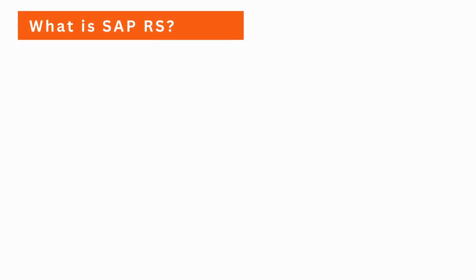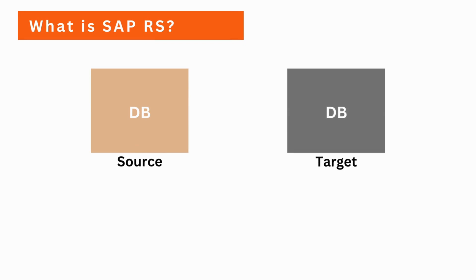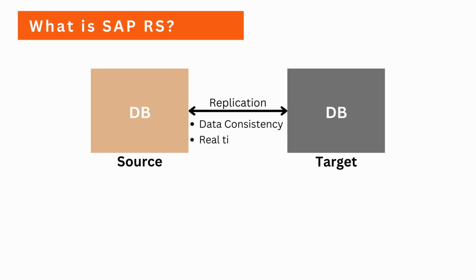Let's take an example. In your organization, you have a source database and a target database, and you plan to keep the source and target in sync. In such a scenario, you can use SAP Replication Server. Replication Server ensures the data is consistent, with real-time synchronization and near real-time replication.